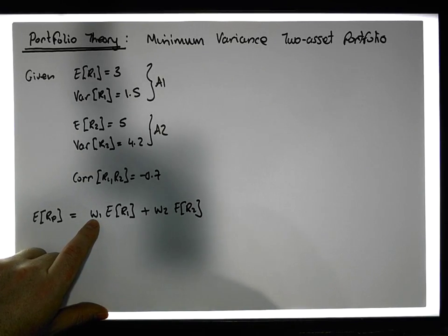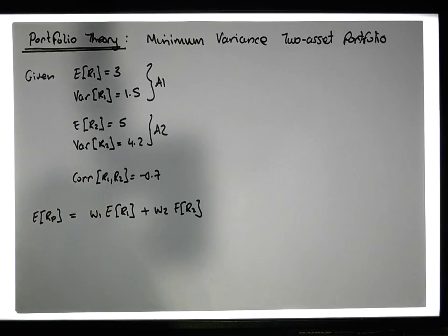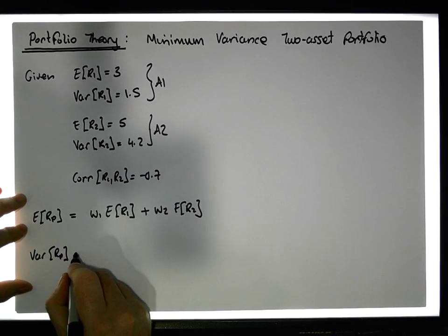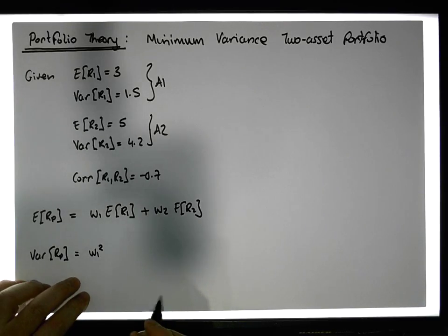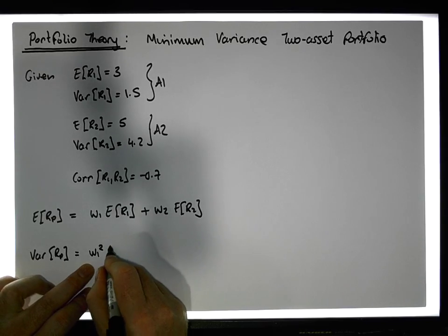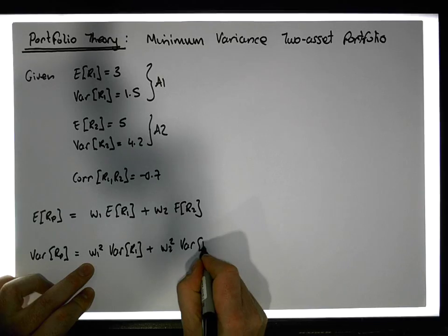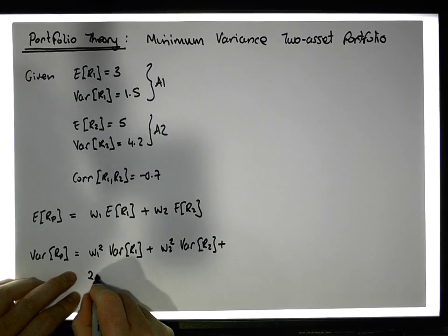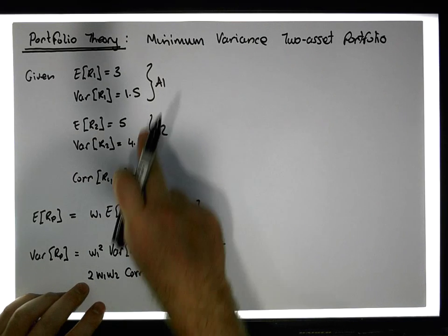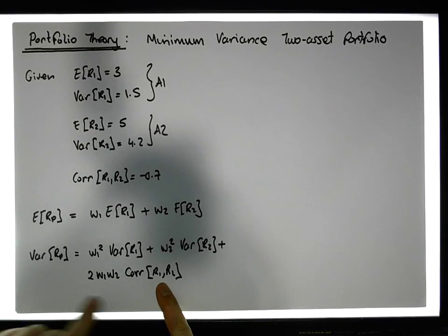The key question is: what should w1 and w2 be to give us a minimum variance two-asset portfolio? The variance of the portfolio returns — Var(R_p) — is given by the formula: w1 squared times the variance of R1, plus w2 squared times the variance of R2, plus twice w1 times w2 times the correlation between R1 and R2, times the standard deviation of asset one times the standard deviation of asset two.